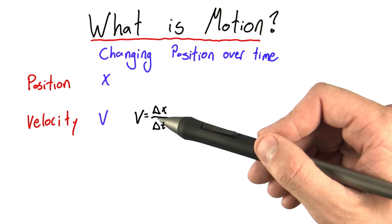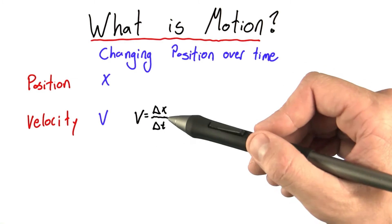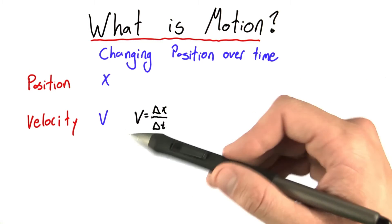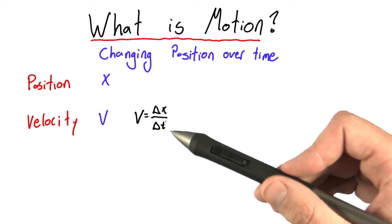This triangle here is the Greek letter delta, and it represents change. X represents position. This mathematical definition really ties in with our intuitive definition of what velocity means.